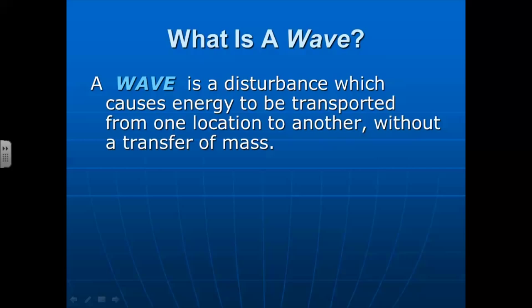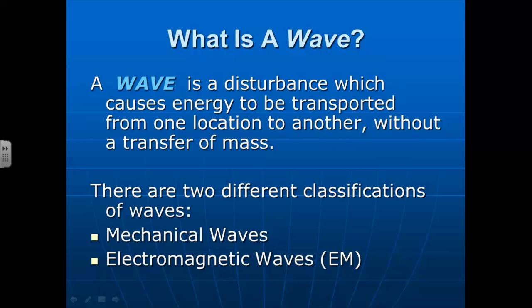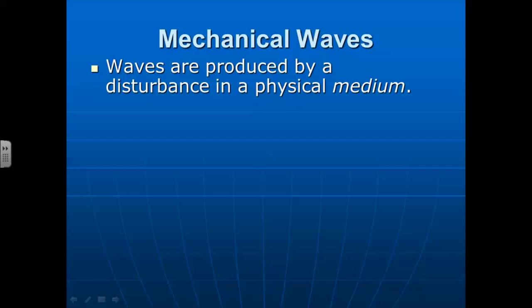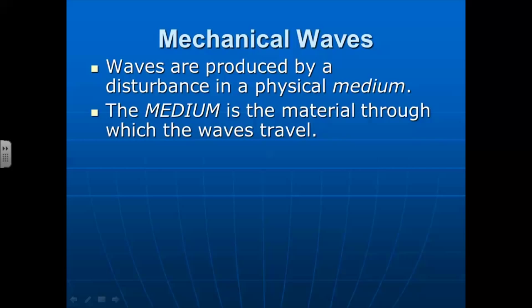There's two different classifications of waves. We have mechanical waves and electromagnetic waves. We also call that EM waves for short. A mechanical wave is a wave that's produced by a disturbance in a physical medium. The word medium means it's the material that the wave is traveling through. Another word that we like to use is propagate.